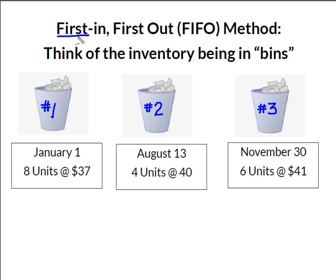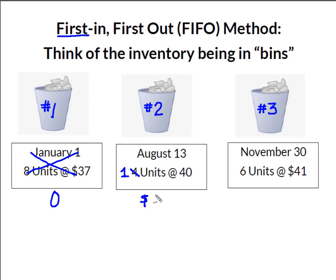We're going to use first-in first-out and we have to sell 11 units so that we have seven remaining. We would sell all eight out of the January bin leaving none there. Then in bin two I need three more units, so I take three units out of my second bin leaving me one unit remaining. Now I've accounted for my 11 units sold, making the inventory in bin 2 worth $40.